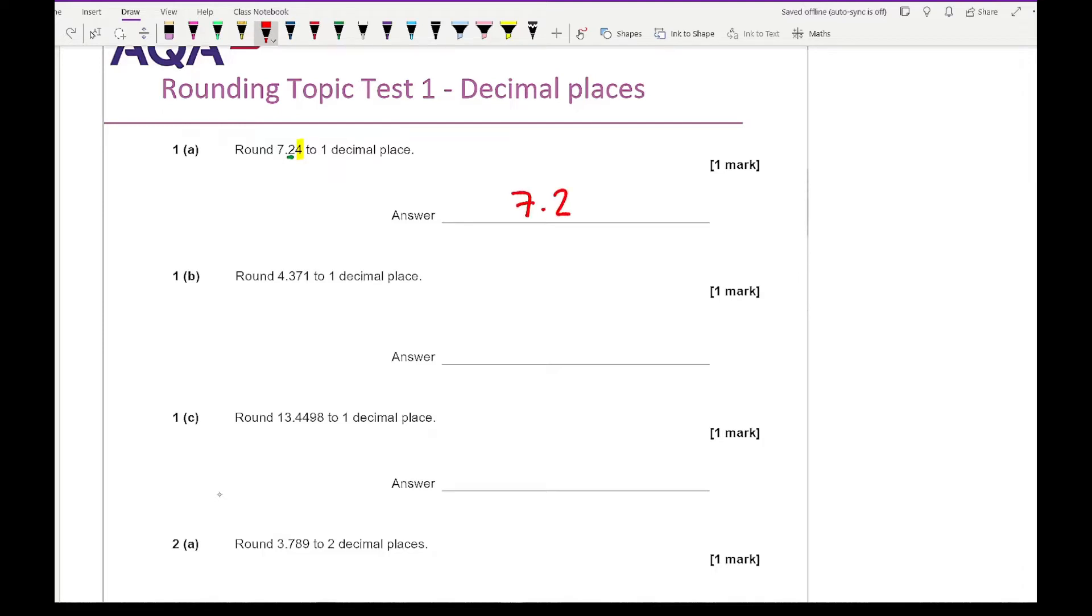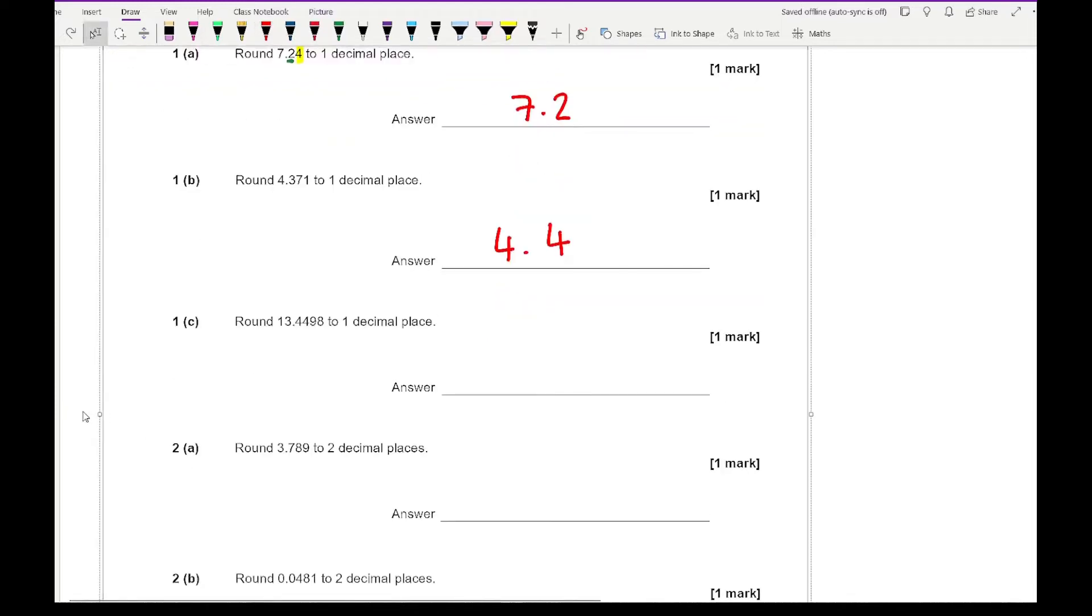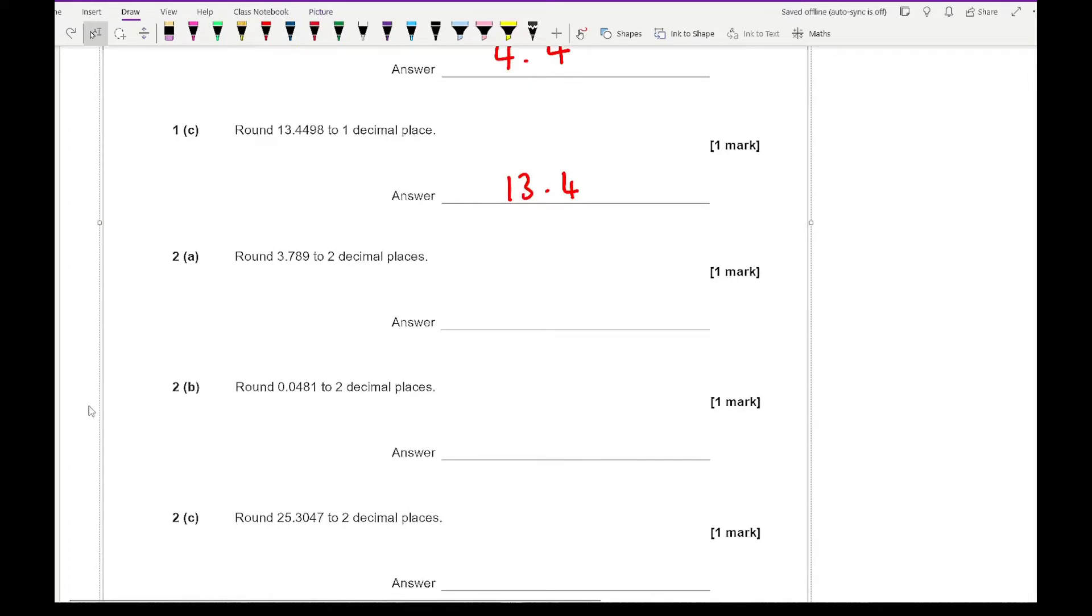For question 1B, the correct answer to 1 decimal place is 4.4. For question 1C, round 13.4498 to 1 decimal place. The correct answer is 13.4. For question 2A, round 3.789 to 2 decimal places. That's going to be 3.79.